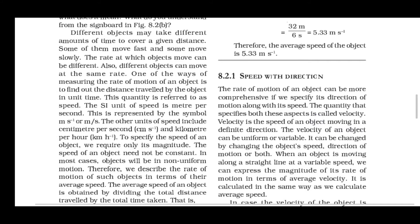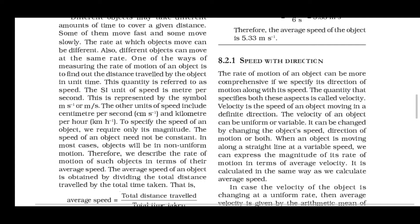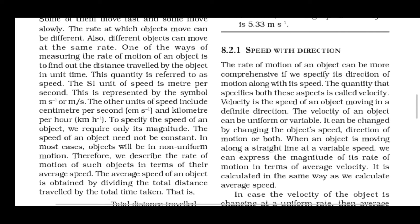Now, speed with direction: the rate of motion of an object can be more comprehensive if we specify its direction. The quantity that includes both these aspects is called velocity. Speed में हम लोग magnitude तो देखते थे लेकिन direction include नहीं करते थे — तो अगर speed की magnitude भी बताएं और direction को भी include करें, तो वो quantity होगी velocity।